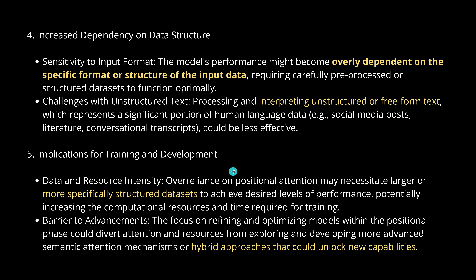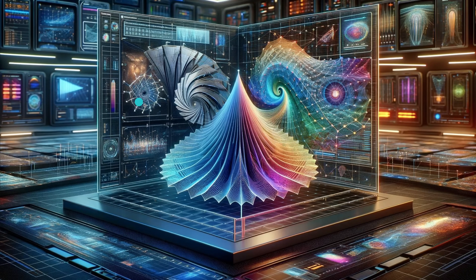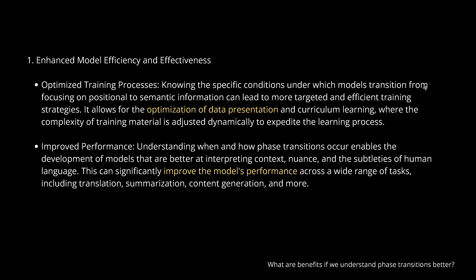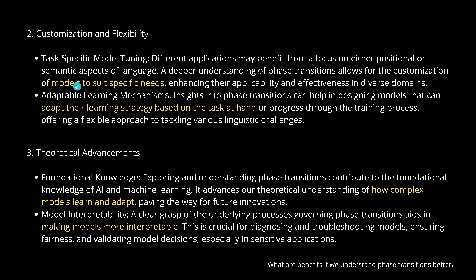Maybe those systems are before their phase transition, and it would be beautiful to have a hybrid approach to unlock both capabilities. This is the first publication I know on this topic. We could optimize the training process with better data presentation — different data structure and content — improving model performance across a wider range of tasks. We can have models pinpointed to specific needs, and models that adapt their learning strategy based on the task at hand, making them more interpretable and transparent.